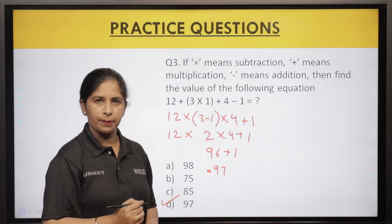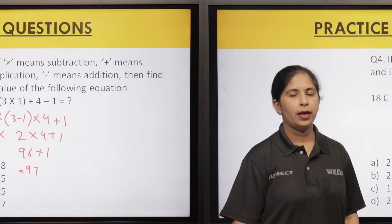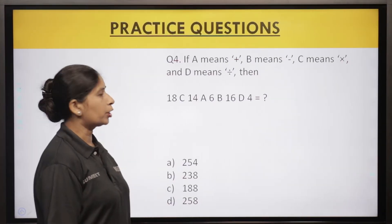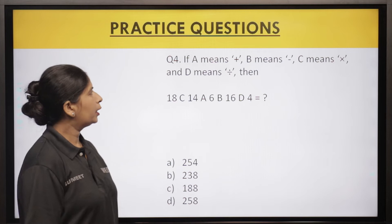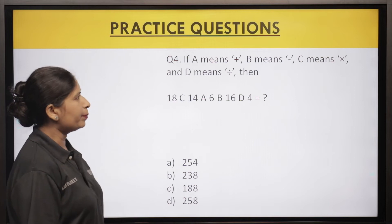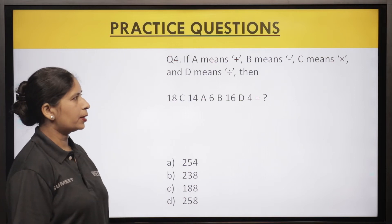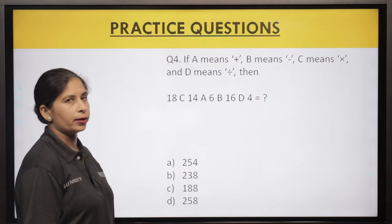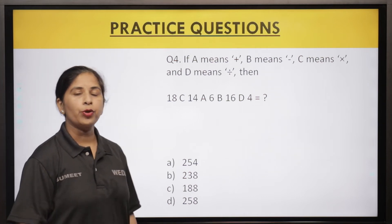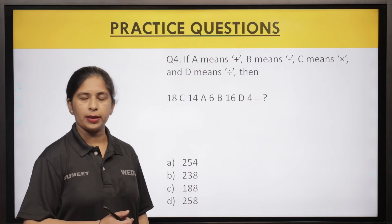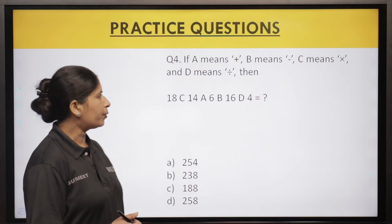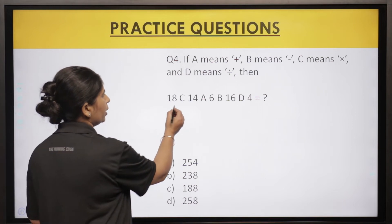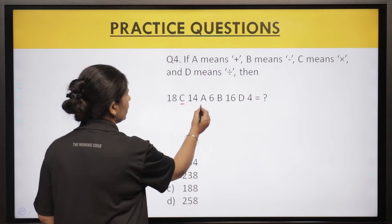Question number 4: if a means plus, b means minus, c means multiply, and d means divide — yeh question dusre tarah se hai. Yahan pe c, a, b, d laga rakha hai. Pehle wale question mein plus, minus, multiply, divide ke symbols the; yahan pe a, b, c, d laga rakha hai aur unka matlab bataya gaya hai.